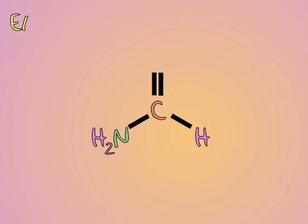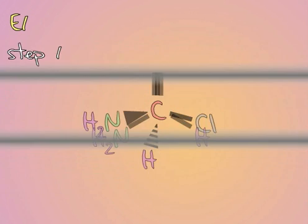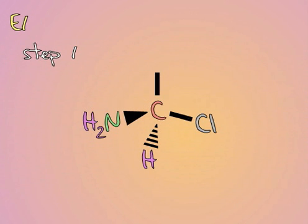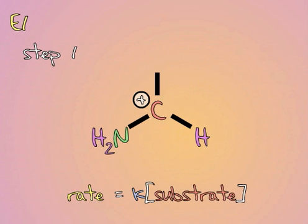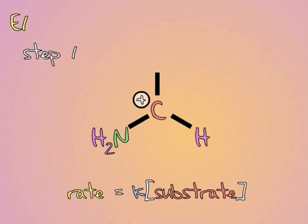E1 reactions are similar to SN1 reactions, in that they are two-step reactions. And as with SN1 reactions, the first step of an E1 reaction is the departure of the leaving group. And that step will be the slow, rate-determining step, meaning that the rate of an E1 reaction depends solely upon substrate concentration.